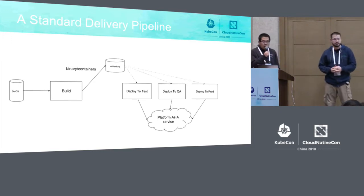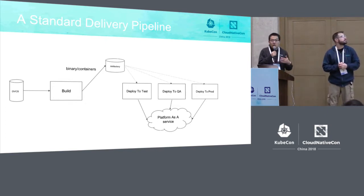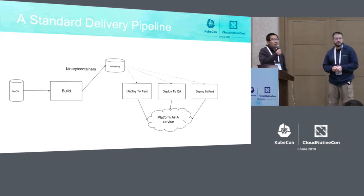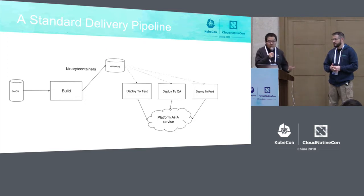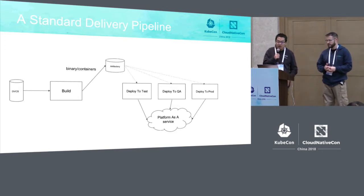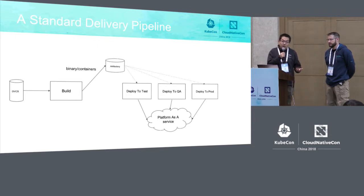We want to talk about how we secure the pipeline. But first, what is the standard delivery pipeline? At Pivotal, we like to automate everything. We use our product Concourse to build pipelines. DVCS — distributed version control system — like GitHub, is standard. You check code into your DVCS, start unit testing, build binaries and containers, create Docker images, then push to an Artifactory or Docker registry. Then you pull the images or binaries and deploy to different environments. We call this 'build once and promote to different environments.'